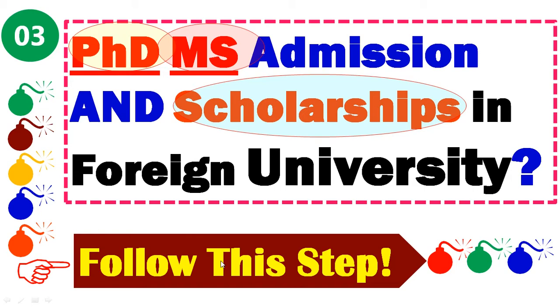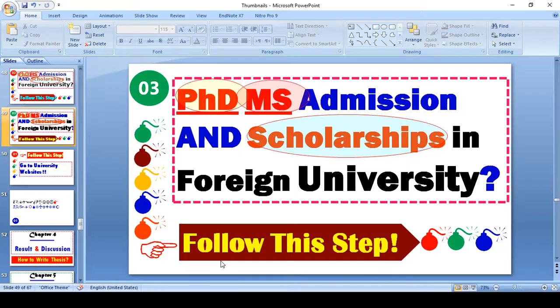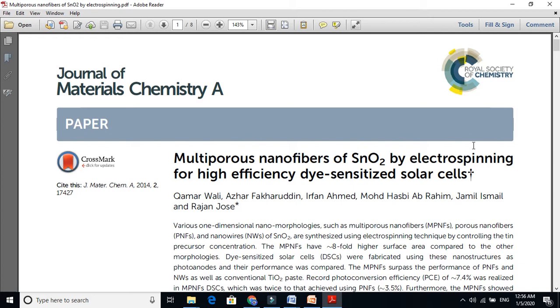You just need to download a paper. For example, if you are interested in dye-sensitized solar cells, Google those keywords and Google will give you articles and papers about that particular field. Whether you are interested in sensors, lithium-ion batteries, artificial intelligence, or any field — just Google it and you will get papers. Download those papers.